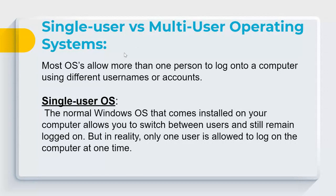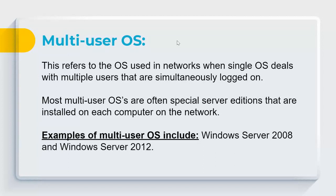Most operating systems allow more than one person to log in using different usernames. A single-user OS — like a standard home Windows installation — lets you switch between users but only allows one user to be truly active at a time. A multi-user OS, used in networks, allows multiple users to log on simultaneously. Multi-user operating systems often come as special server editions, such as Windows Server 2008 or Windows Server 2012.